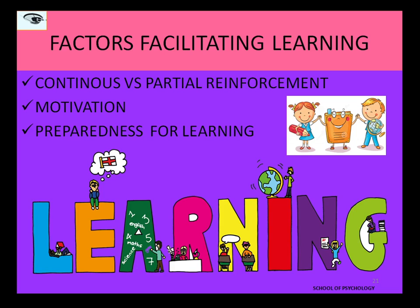In continuous reinforcement, the organism is reinforced at every single trial — after every response made by the organism, the organism will be reinforced. That's what is essentially happening in continuous reinforcement. There is no breakage; for every trial, for every response, the organism will be given the reinforcement.